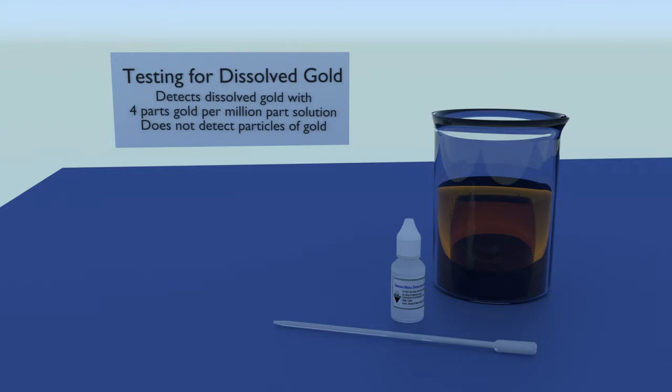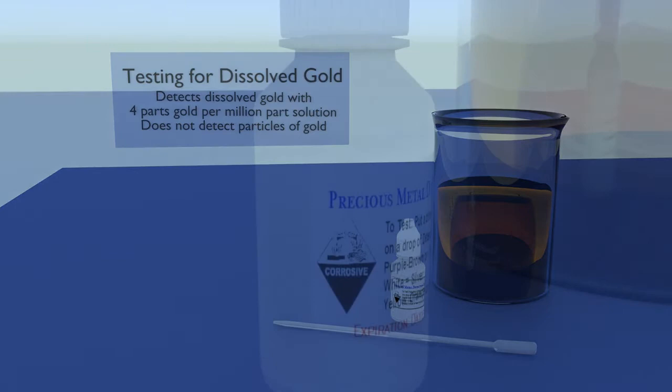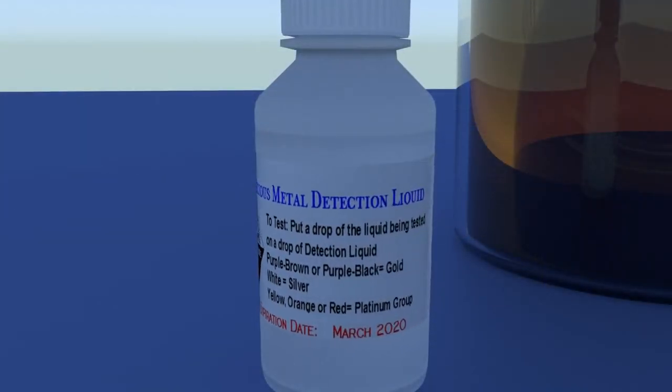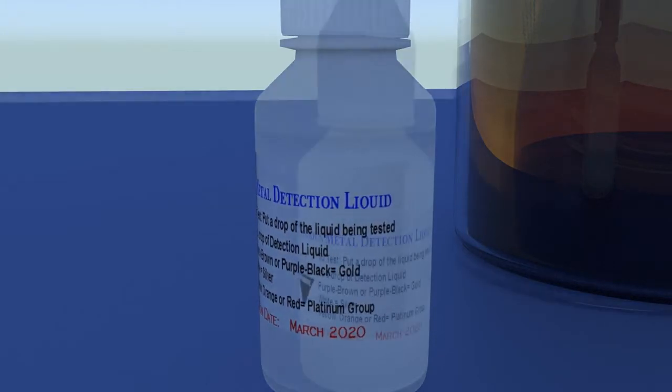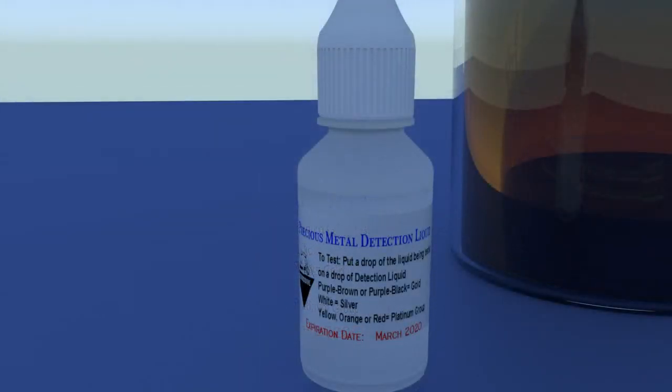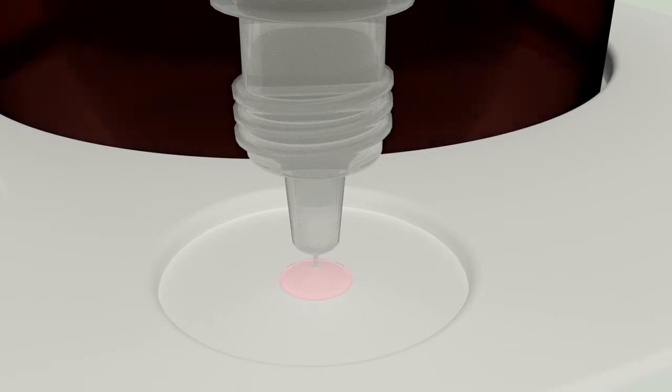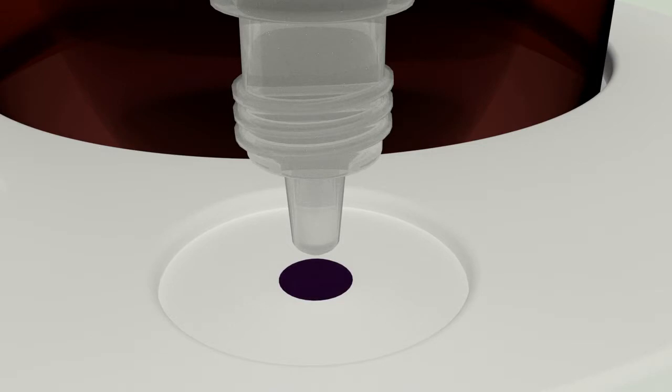If purchasing this ready-made, make sure that the label has an expiration date and replace the solution when the expiration date has passed. A good ready-made solution will have an effective shelf life of one year. Homemade solutions have an effective shelf life of three months. This test is simple and very sensitive. It will detect dissolved gold up to four parts of gold for every one million parts of solution. Particles of gold will not be detected by this test.